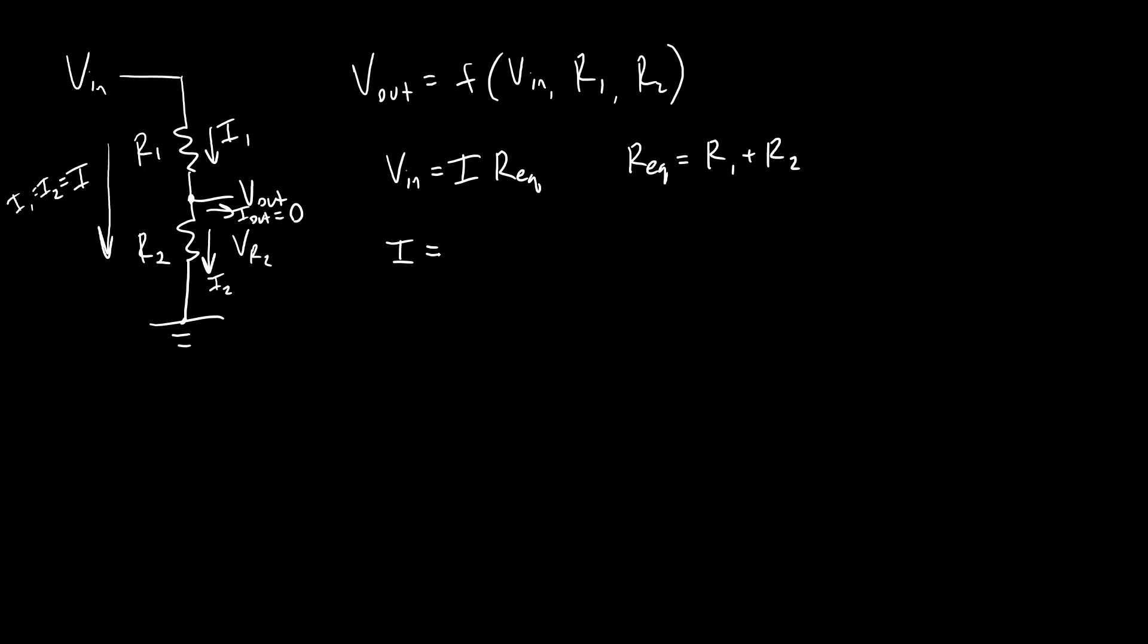That's going to give me I equals V_in over R1 plus R2. Now I have an equation for I but remember I want the voltage just over resistor R2, V_out, so for that I have V_R2 equals V_out which is equal to I R2, so now I can just plug in my expression for I into this equation and that's going to give me